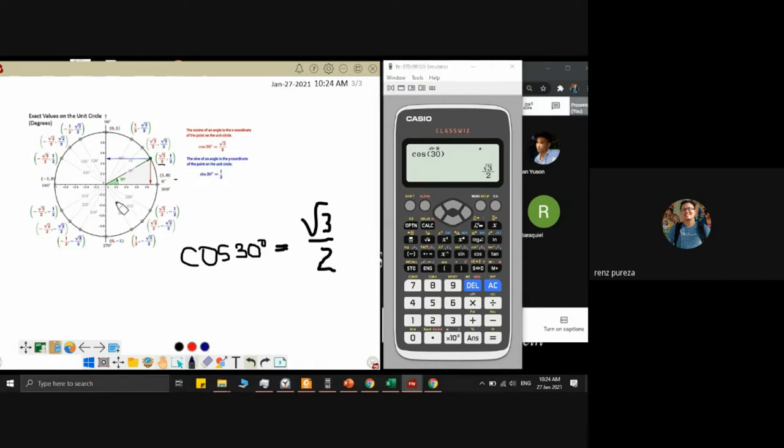This is square root of 3 over 2 that's what our calculators output. Let's try sine 30 - 1 half.